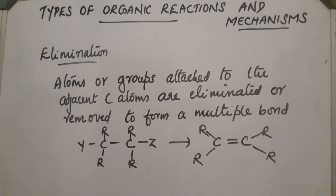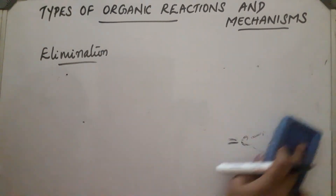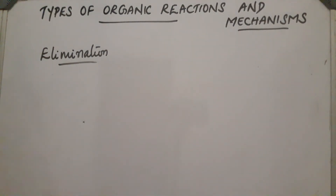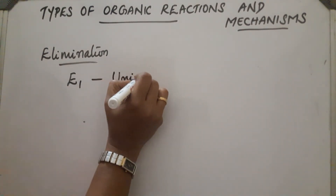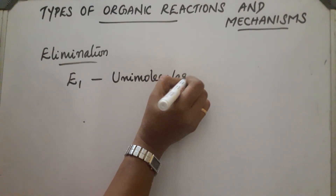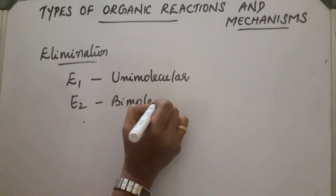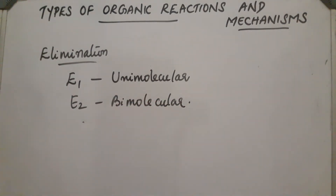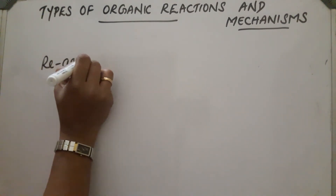Elimination reactions are again divided into two types: E1, which is unimolecular elimination and a first-order reaction, and E2, which is bimolecular elimination and a second-order reaction.